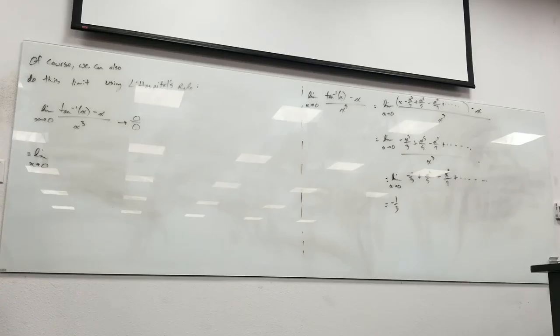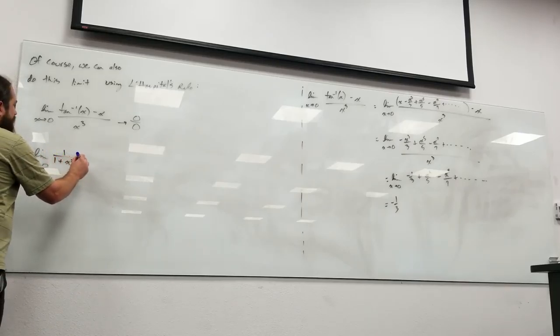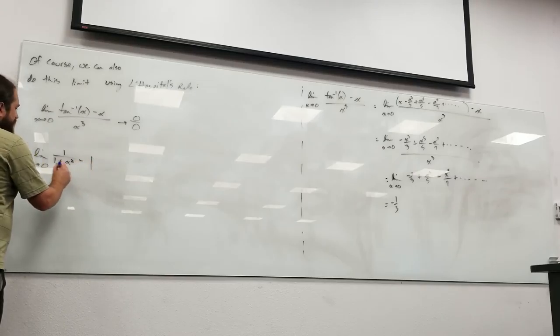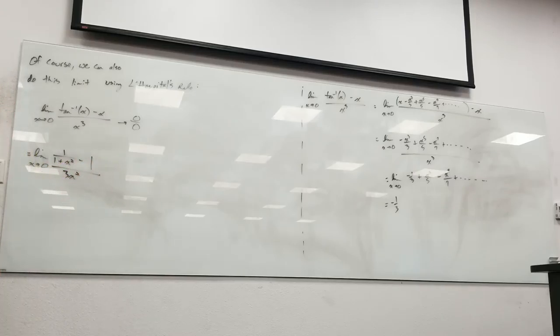The derivative of the inverse tangent of x is 1 over 1 plus x squared, and that will be minus 1 over 3x squared.